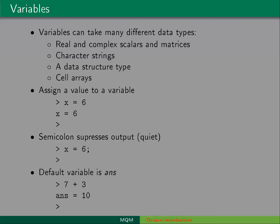If we don't specify a variable, Octave will automatically create the variable ans and assign the value of the output to that variable. For example, if we just type 7 plus 3 and hit enter, then Octave has created a variable called ans and has assigned the value 10 to that variable.